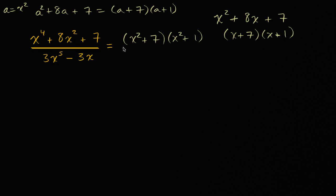All right, so that's the numerator. Now let's think about the denominator. So the denominator, both of these terms are divisible by 3x, so let's factor out a 3x.